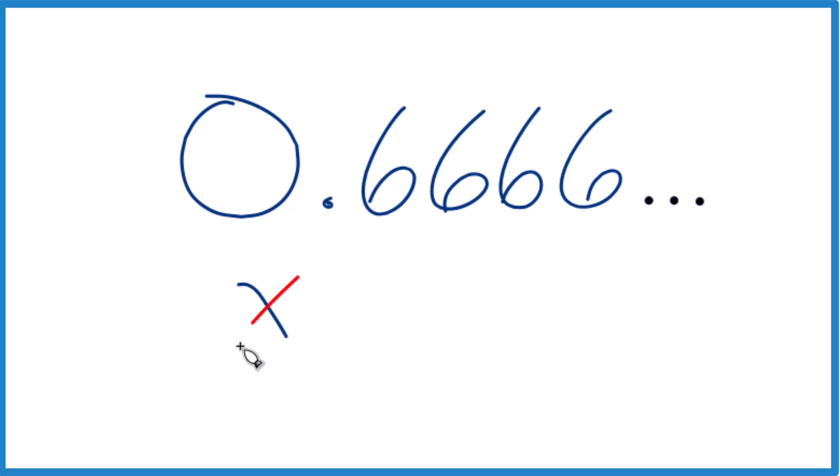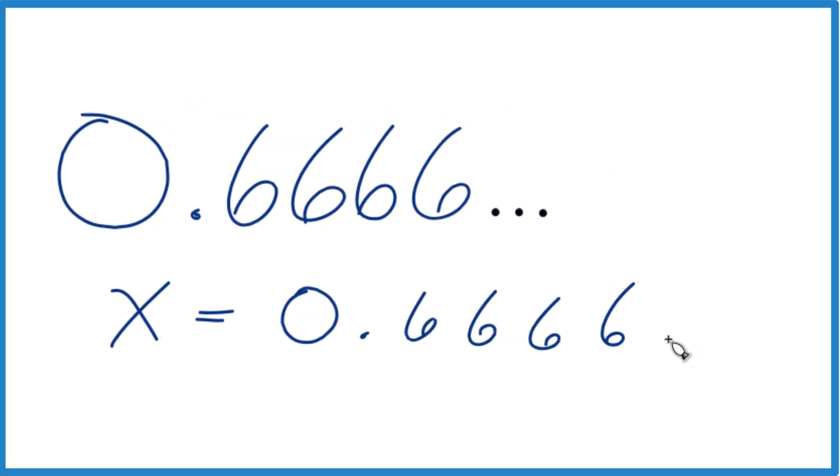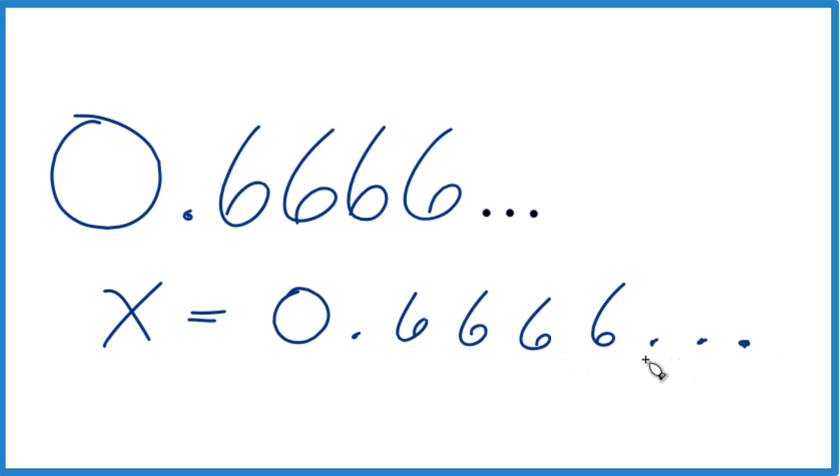You could say x equals 0.6666 keeps going. So that's the start. And if we could get this to have a whole number in it, that would be really helpful. So why don't we multiply this by 10? That would give us 6.6666 repeating.